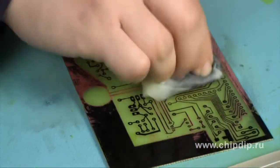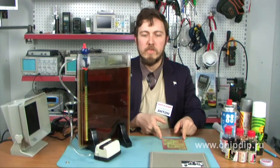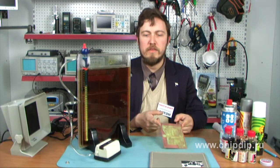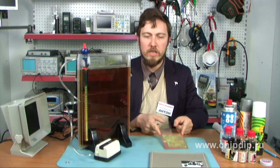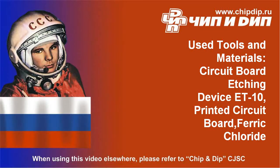After the extraction of the board we remove the varnish from the paths. We have etched a good quality board by ourselves for 10 minutes with the help of the device for the etching of circuit boards ET10.